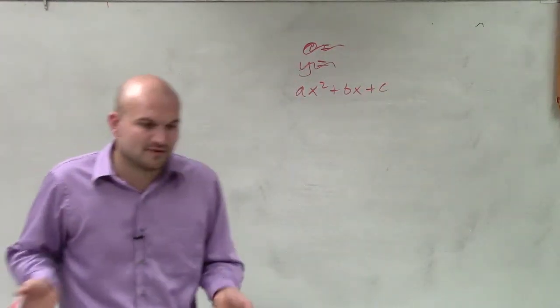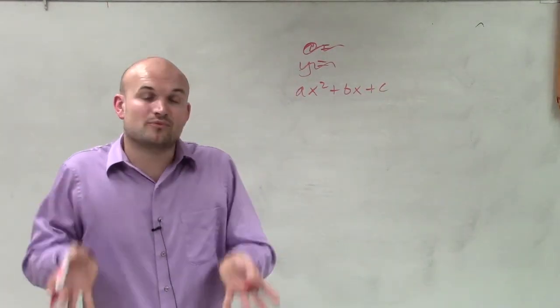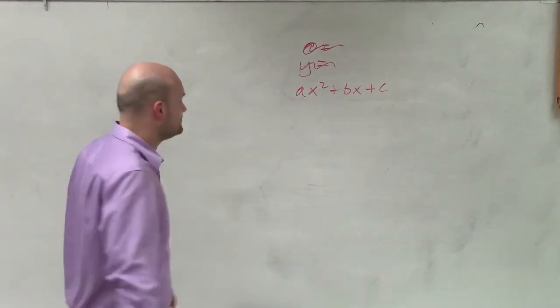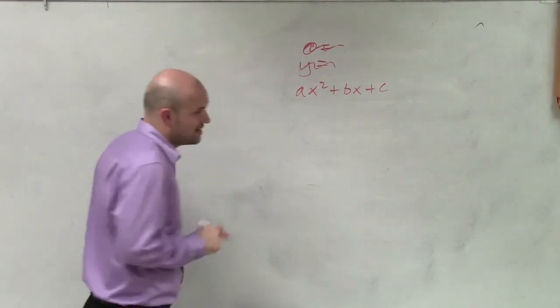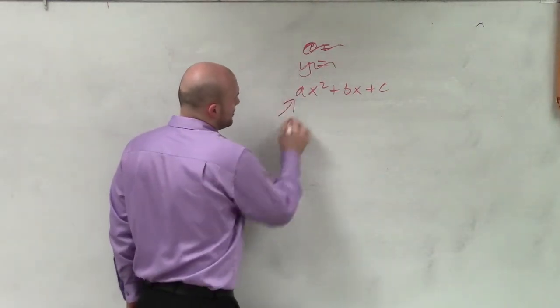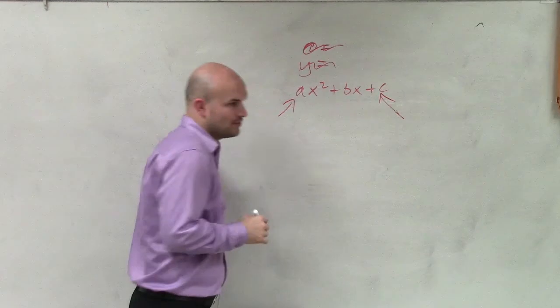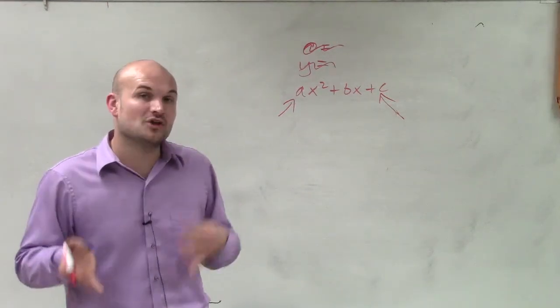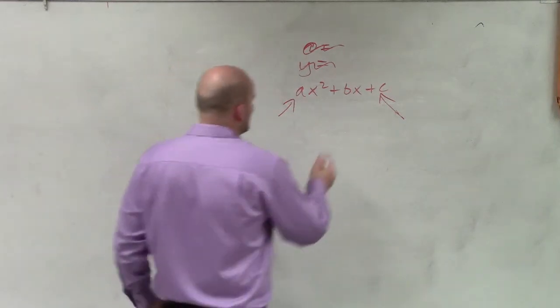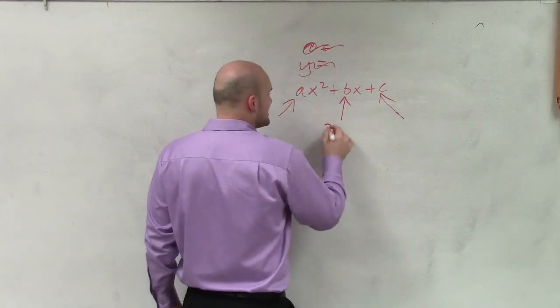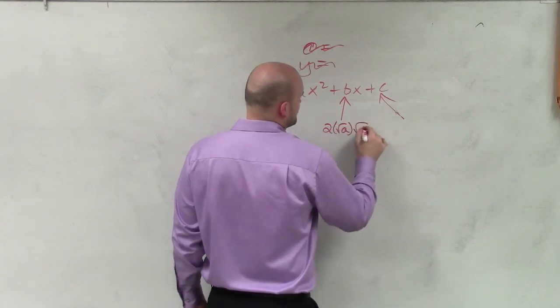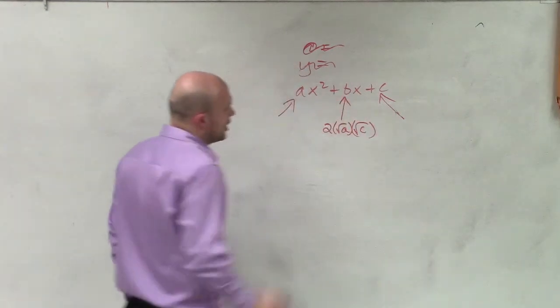And the reason why we call this a perfect square trinomial is because we can factor it down into what we call a binomial squared. And the way that this perfect square trinomial works is this is what we call a square number, and this is what we call a square number. And when we take those two square numbers and multiply them by 2, that is going to be our middle term. So I can say 2 times the square root of a times the square root of c is going to be our middle term.